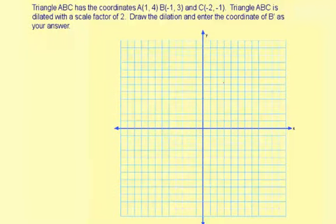Triangle ABC has the coordinates 1, 4 for A. Let me go ahead and plot that. Over 1, up 4. So that's A.